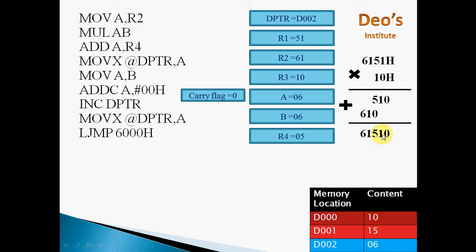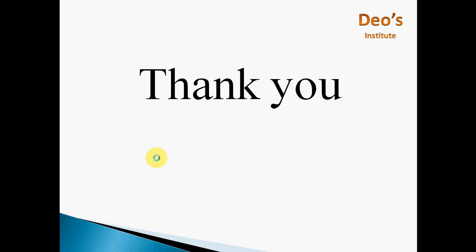So by this way we get the result in 3 memory locations: 06, 15, 10 — giving the full value 061510H. The result of this 16-bit by 8-bit multiplication is a 24-bit number. The last instruction is LJMP 6000H — to exit the program we perform a long jump operation. This is how multiplication of a 16-bit number by an 8-bit number is done using 8051 microcontroller assembly language. Thank you very much for watching. I hope my videos are helping you with microprocessor architecture and interfacing concepts. If you like the video, please press the like button, ask queries in the comment section, and don't forget to subscribe and click the bell icon.